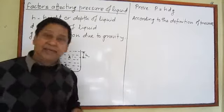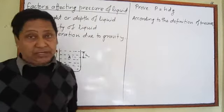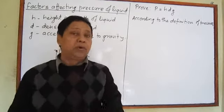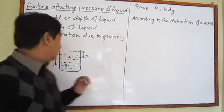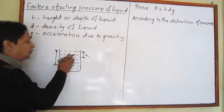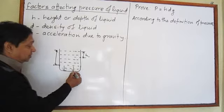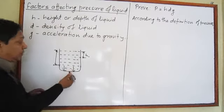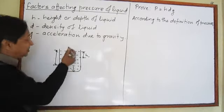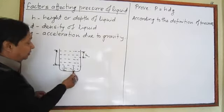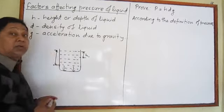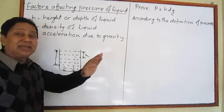The third factor which affects liquid pressure is acceleration due to gravity. Acceleration due to gravity is different in different parts of the earth — it is more at the pole and less at the equator. So if the same beaker of water is taken to the pole, the pressure at the bottom will be more, but if taken to the equator, the pressure at the bottom will be less.